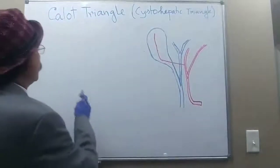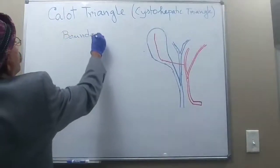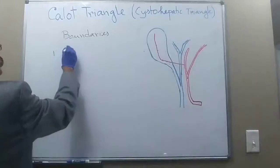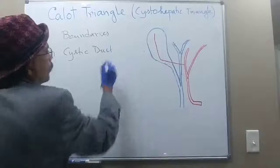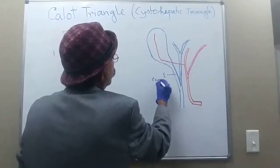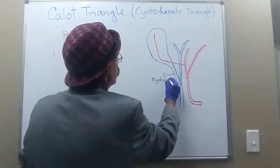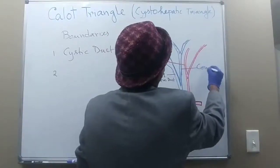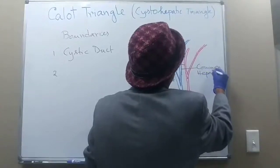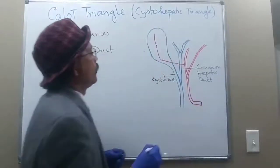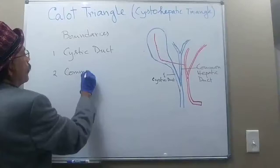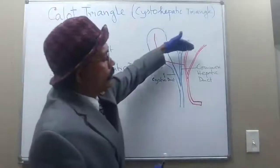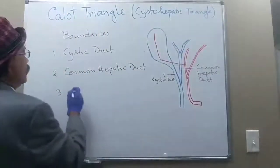So what are the boundaries of the Cystohepatic Triangle or Calot's Triangle? It is bounded by the cystic duct — this is cystic duct number one. The cystic duct is bounded by the common hepatic duct, and bounded above by the inferior surface of the right lobe of the liver.